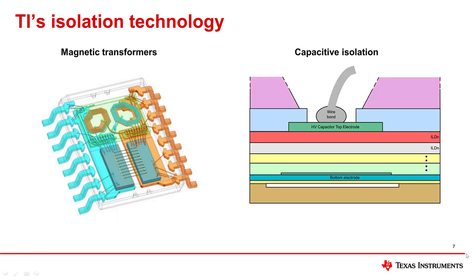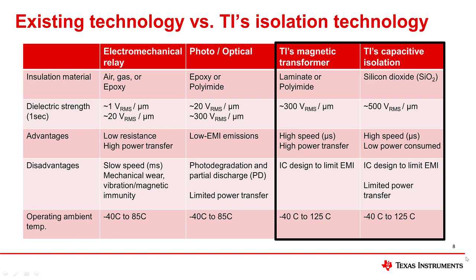TI's isolation technologies include magnetic transformers and capacitive isolation. Magnetic transformer technologies use laminate or polyamide materials which allow switches to turn on and off in a matter of microseconds. Through capacitive isolation, silicon dioxide is used as an insulation material, which is a proven, reliable isolation barrier with high dielectric strength, enabling low power consumption and small solution sizes.